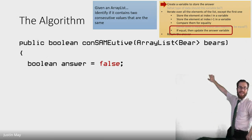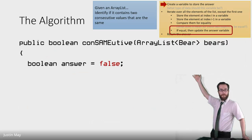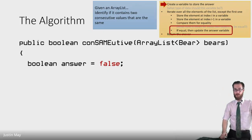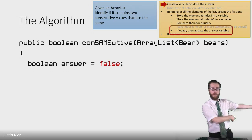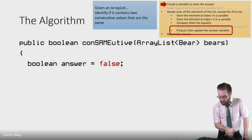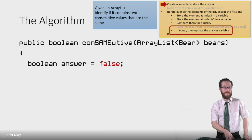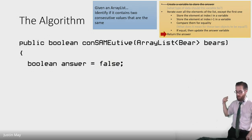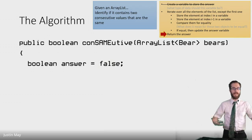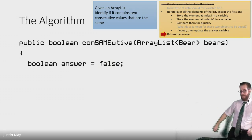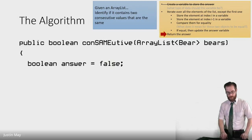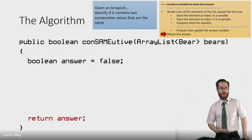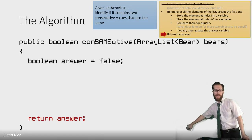Another way to think about it: inside the loop, if two heights are equal we're going to update the answer to true. So if we're updating it to true, we should start from the opposite — false. Once I create this variable, I like to skip to the end and write the return statement right away, just so I don't forget it. Students who get everything right but forget to return the answer on the AP test lose points — it's a real bummer. So I write my variable, then immediately write 'return answer' at the bottom.